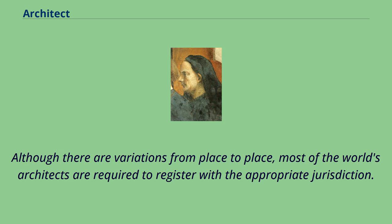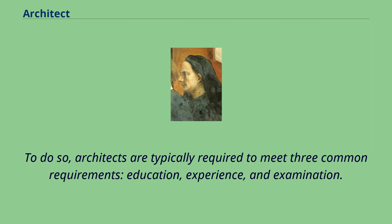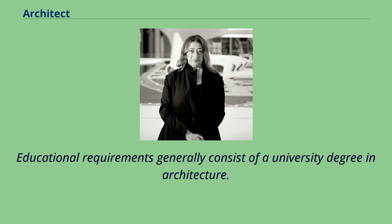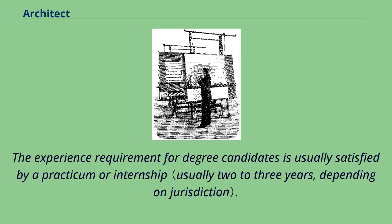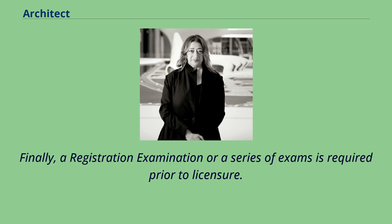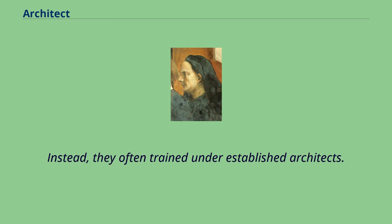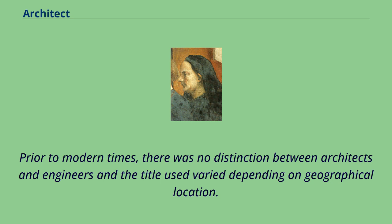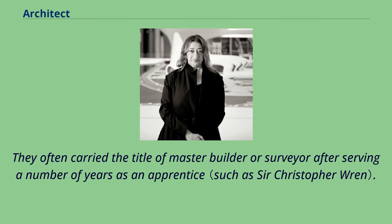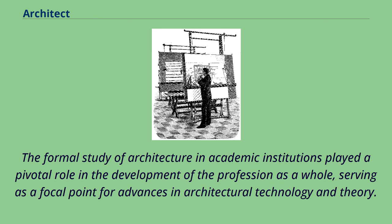Although there are variations from place to place, most of the world's architects are required to register with the appropriate jurisdiction. To do so, architects are typically required to meet three common requirements: education, experience and examination. Educational requirements generally consist of a university degree in architecture. The experience requirement for degree candidates is usually satisfied by a practicum or internship. Finally, a registration examination or a series of exams is required prior to licensure. Professionals engaged in the design and supervision of construction projects prior to the late 19th century were not necessarily trained in a separate architecture program in an academic setting; instead, they often trained under established architects, carrying the title of master builder or surveyor after serving a number of years as an apprentice. The formal study of architecture in academic institutions played a pivotal role in the development of the profession as a whole, serving as a focal point for advances in architectural technology and theory.